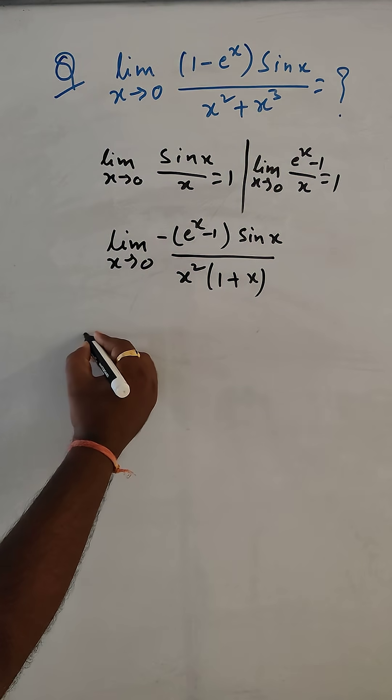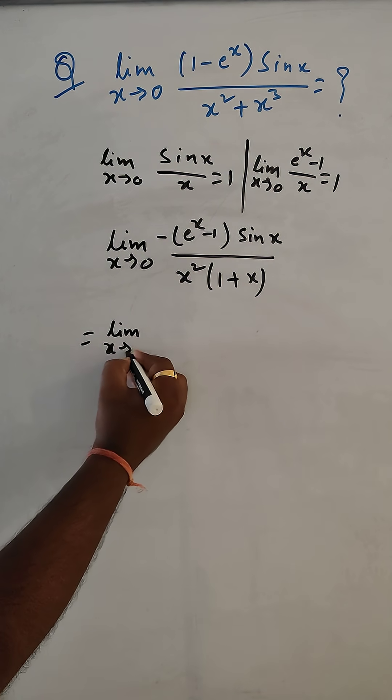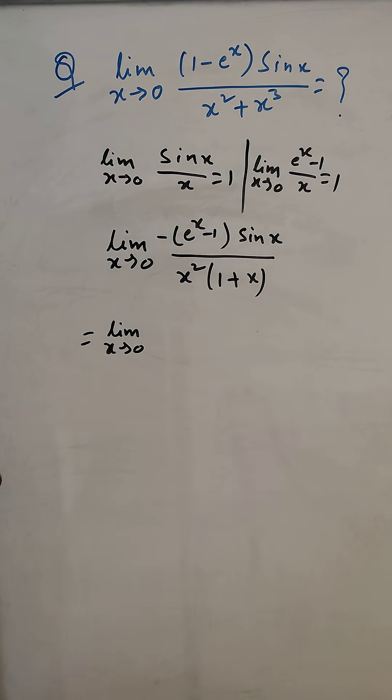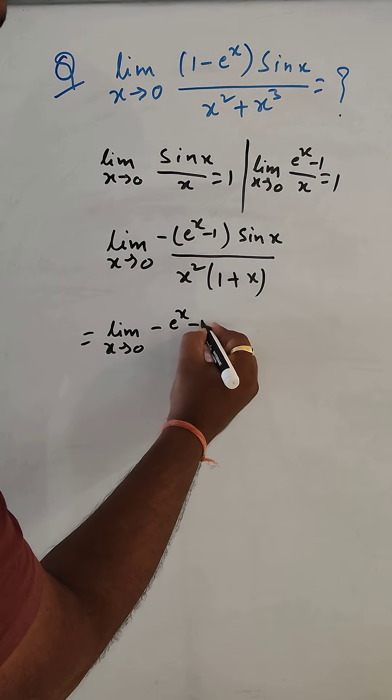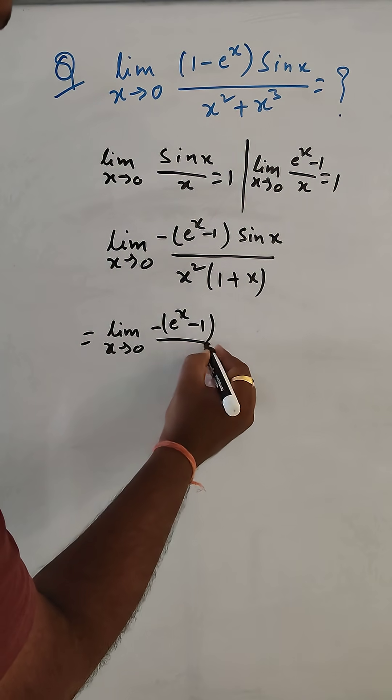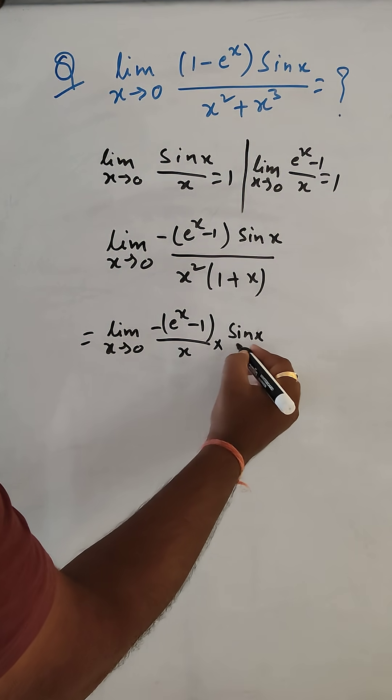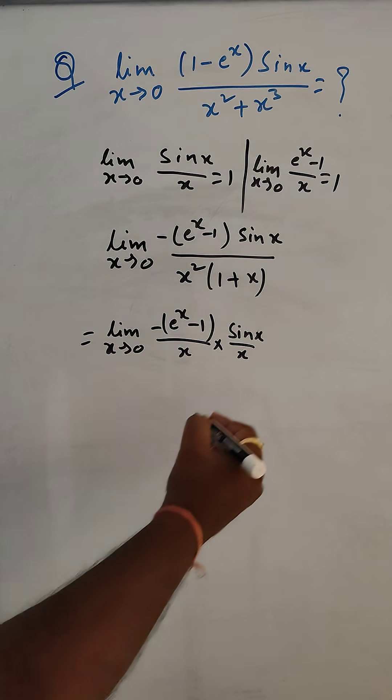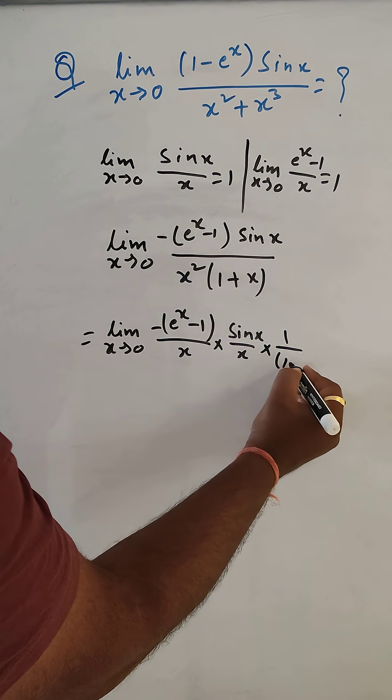Now the next limit, x tends to 0. What we can do? Minus e to the power x minus 1, times minus 1 by x, times sin x by x, and here 1 by 1 plus x.